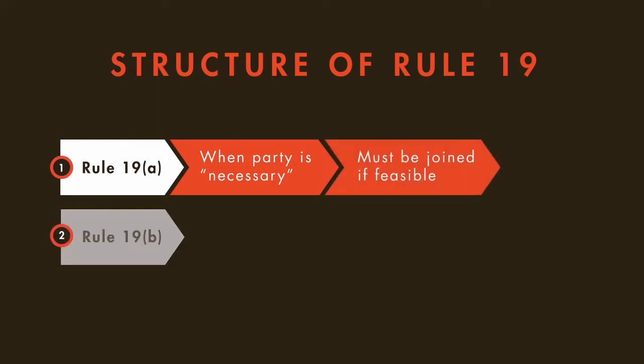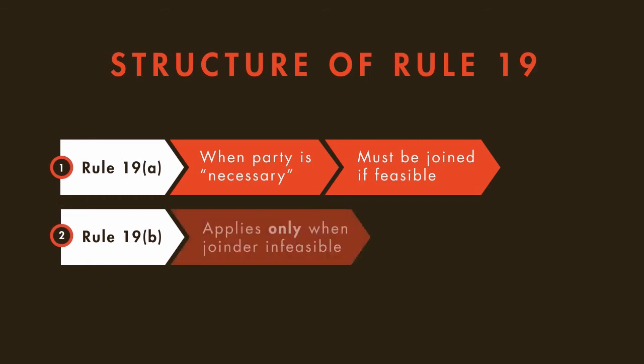Rule 19b only applies when a necessary party cannot be joined to the case because joinder is infeasible. And it sets forth the factors that the court must consider in determining whether a necessary party is indispensable. If a necessary party who cannot be joined is indispensable, then the case must be dismissed.